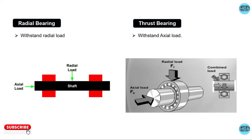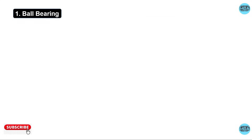Radial bearings withstand radial loads, and thrust bearings generally withstand axial loads. There is also the combined load, which is the resultant of the axial and radial load. The ball bearing is a commonly used type of bearing and is used to handle both radial and thrust load.